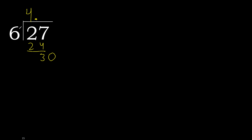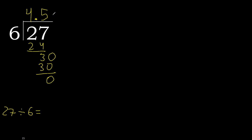6 multiplied by 6 is greater. Multiplied by 5 is 30. 30 minus 30 is 0. Finish it. Therefore 27 divided by 6 is 4.50.